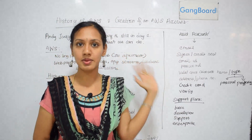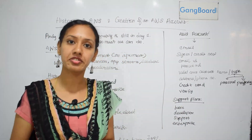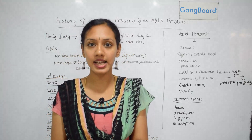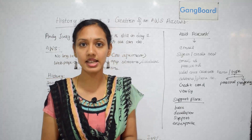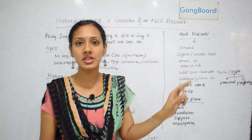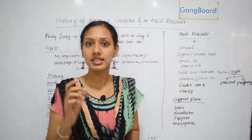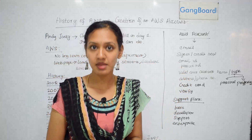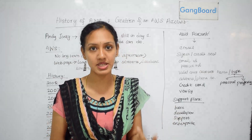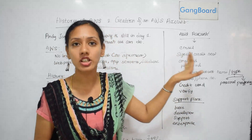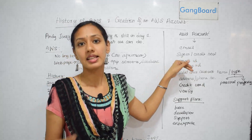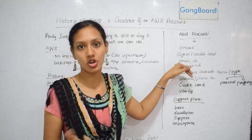Now we are clear about the history of AWS. Let me tell you how to create an AWS account — it is very simple. You can directly log on to the Amazon AWS site, which asks you to either sign in or create a new account. All you need is a valid email ID. You cannot use a dummy email ID because all your communications will be sent through it. Once you click 'Create a new account,' enter your valid email ID — this is called the root account address.